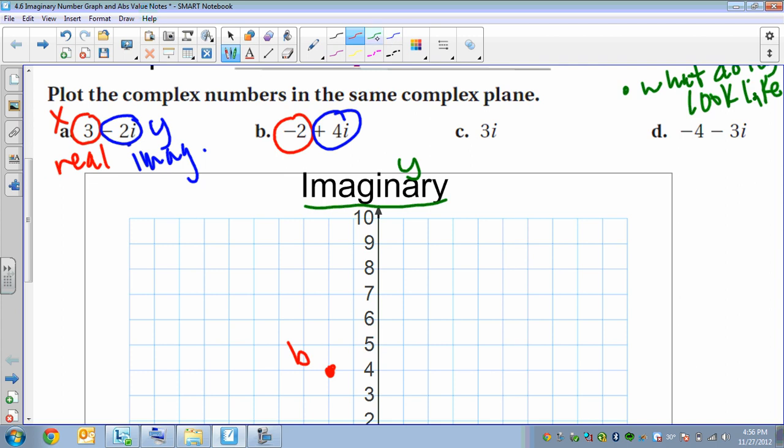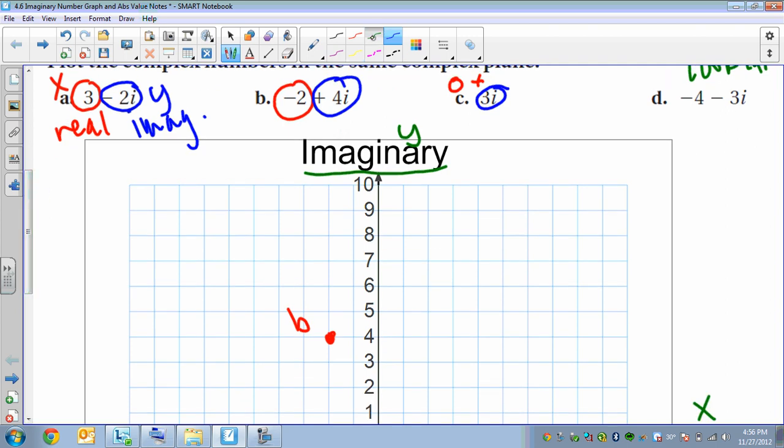Letter C is here. The real part is like 0 plus. Remember, there's no real part necessarily with this. So that's like 0. And then our imaginary part is 3. So when we graph this point, we're going to go, we won't go left or right. We'll just go up 3. And that will be C.